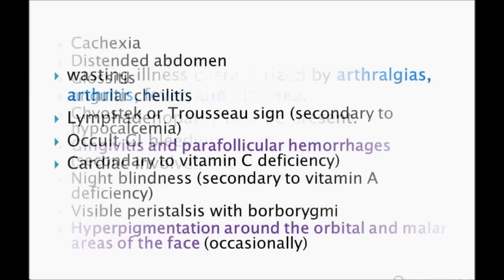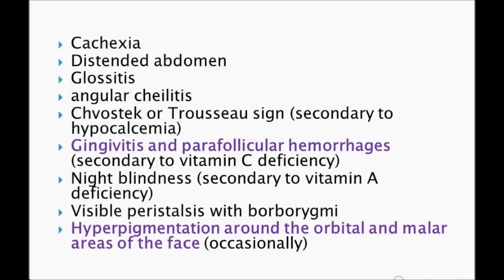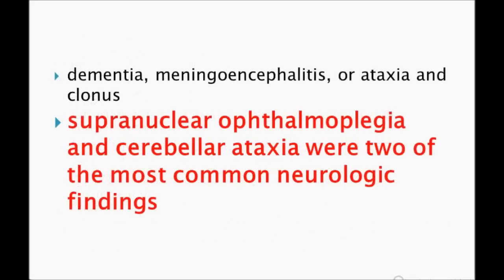On examination, the important point to note for USMLE is hyperpigmentation around the orbital and malar areas of the face. Also important are gingivitis and perifollicular hemorrhages. The remaining findings are due to deficiencies of certain metals or vitamins.